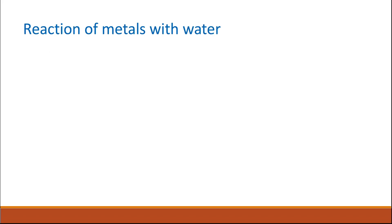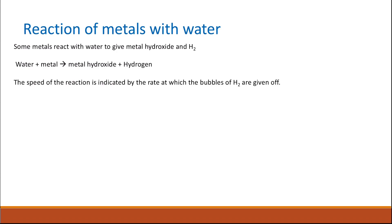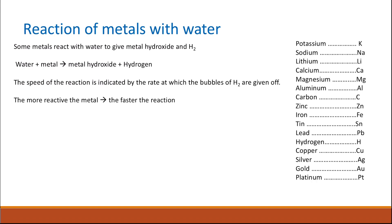Another example of reactions showing different reactivity of metals is the reaction of metals with water. We can use the reactivity series to predict the rate of reaction. Some metals will react with water to give metal hydroxide and hydrogen. The speed of the reaction is also determined by the rate of hydrogen gas produced.